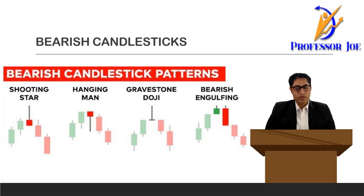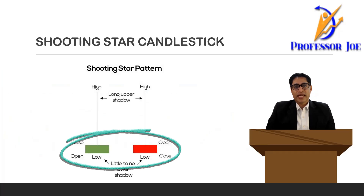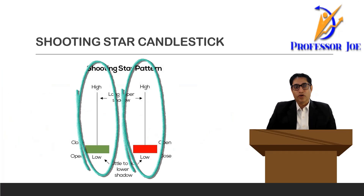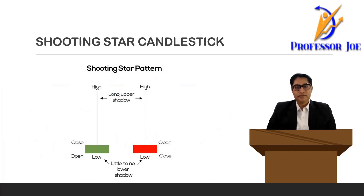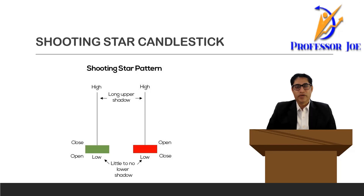Let's see how to identify these candlesticks and in what location of the chart they represent a perfect entry point. For the shooting star, number one: the body of the candle is very small and should be seen on the lower side of the candle. Number two: the candle will have a long tail, wick, or shadow — three to six times the size of its body. It may also have a small wick on the lower end, or sometimes no lower wick at all.